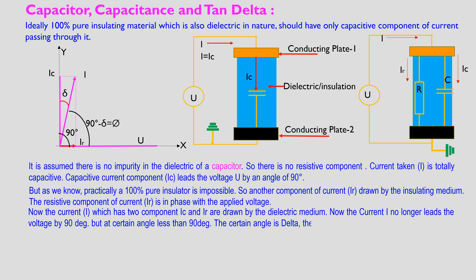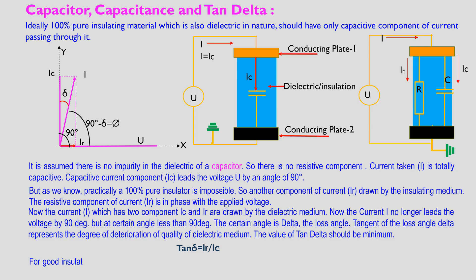This certain angle is delta, the loss angle. Tangent of this loss angle delta represents the degree of deterioration of quality of the dielectric medium. The value of tan delta should be minimum for good insulation. The ratio of Ir by Ic would be quite low. This ratio is commonly known as tan delta. It is also referred to as dissipation factor DF.